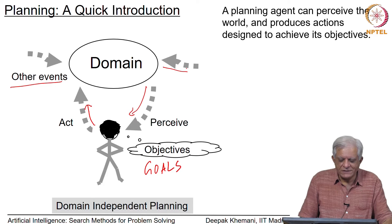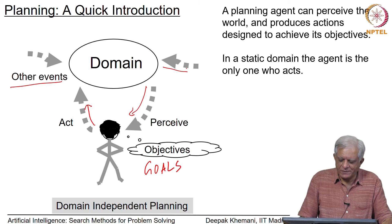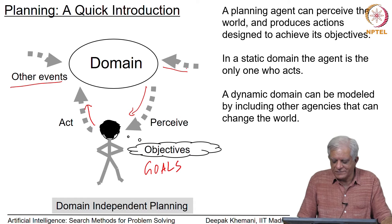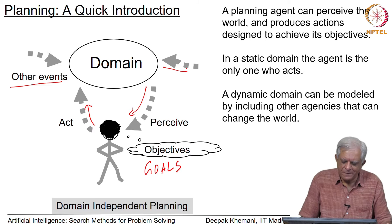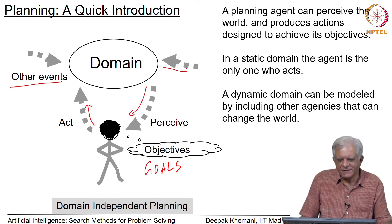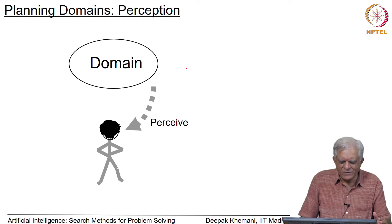A plan can perceive the world and produces actions designed to achieve its objectives or goals. In a static domain the agent is the only one who acts; in a dynamic domain we can have other agencies such as other agents, nature, or contextual rules — for example, a market that opens at 10 in the morning and closes at 7 in the evening. If you want to go shopping, you have to be aware of when the shop is open, and that is not within your control.